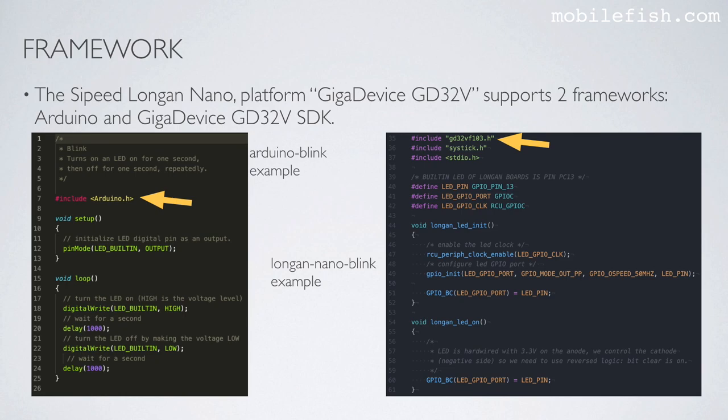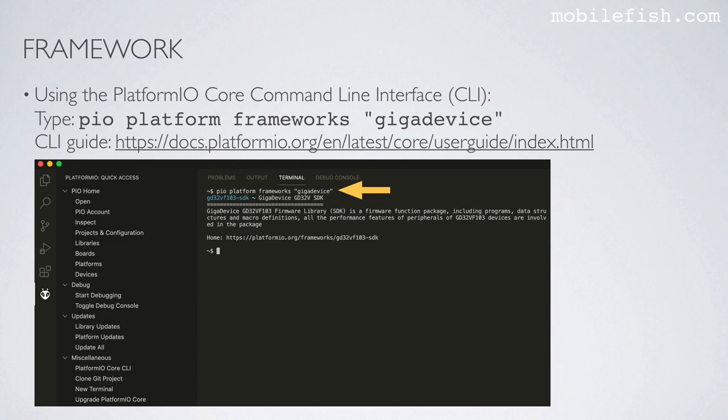The Sipeed Longan Nano, when selecting the GigaDevice GD32V platform, supports two frameworks: Arduino and GigaDevice GD32V SDK. In the Arduino Blink example you must include the Arduino header file, but in the Longan Nano Blink example it includes a different header file which is part of the GD32V SDK.